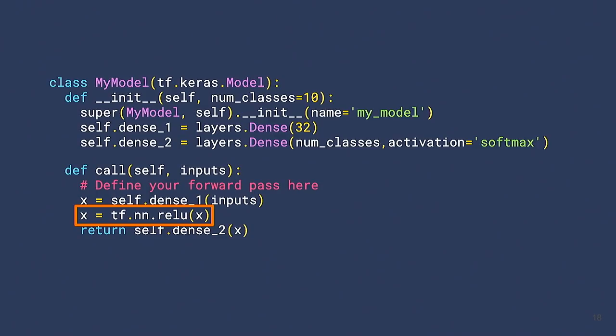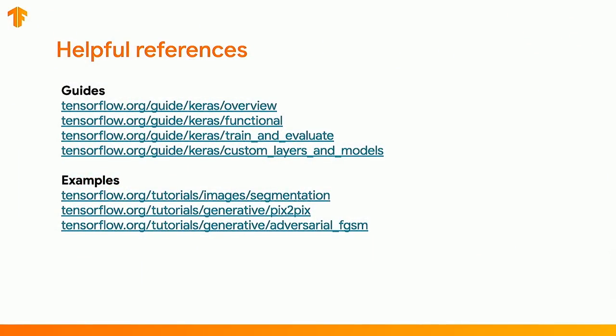There's nothing stopping you from replacing built-in dense layers entirely — if you look at code doing WX + B, you can write that from scratch in Python and use it here instead. These are references from TensorFlow 2 guides that go into detail on how to use each of the three Keras API styles, how to write custom layers, and similar topics. There are also recommended tutorials showing different ways of building things.